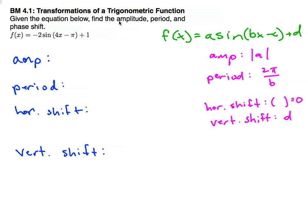In this particular problem, we need to find the amplitude, period, and phase shift for this function: f of x equals negative 2 sine of 4x minus pi plus 1.